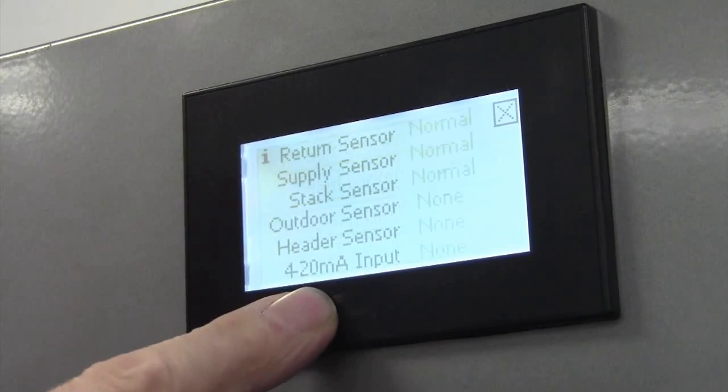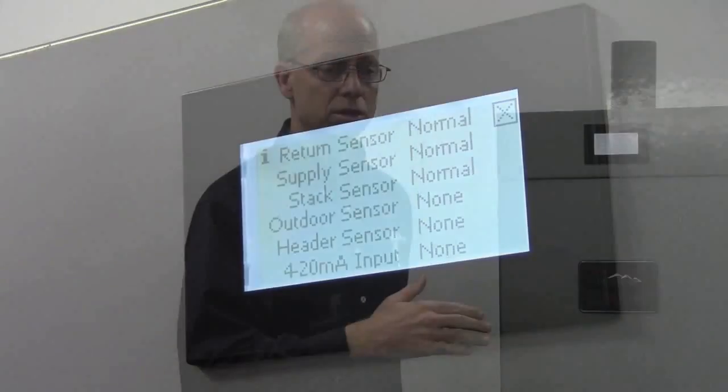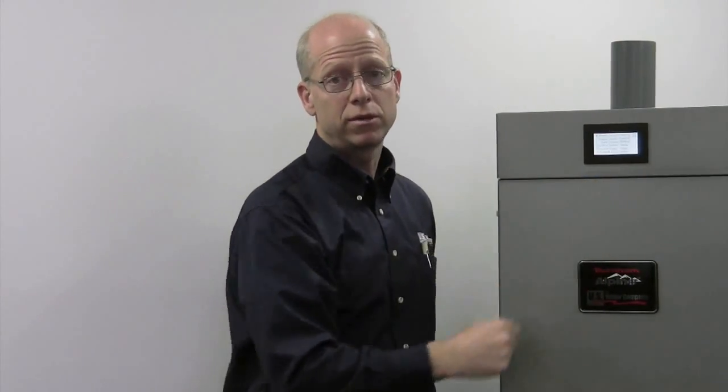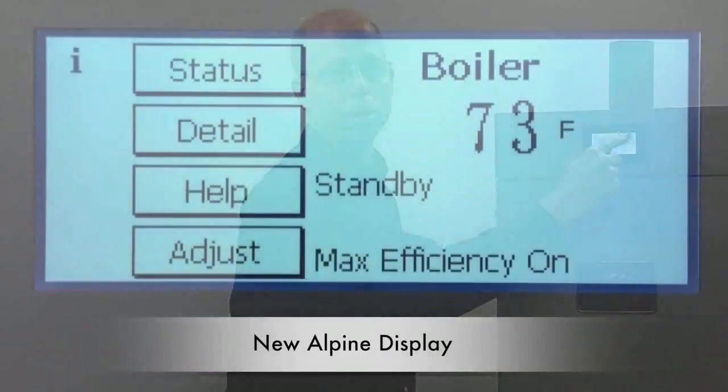Under sensor fault, we used to give you information about each sensor, its status, whether it was in good condition or had a fault. Now we give you the values of every sensor here because we have the extra space. Let's take a look at the new model.